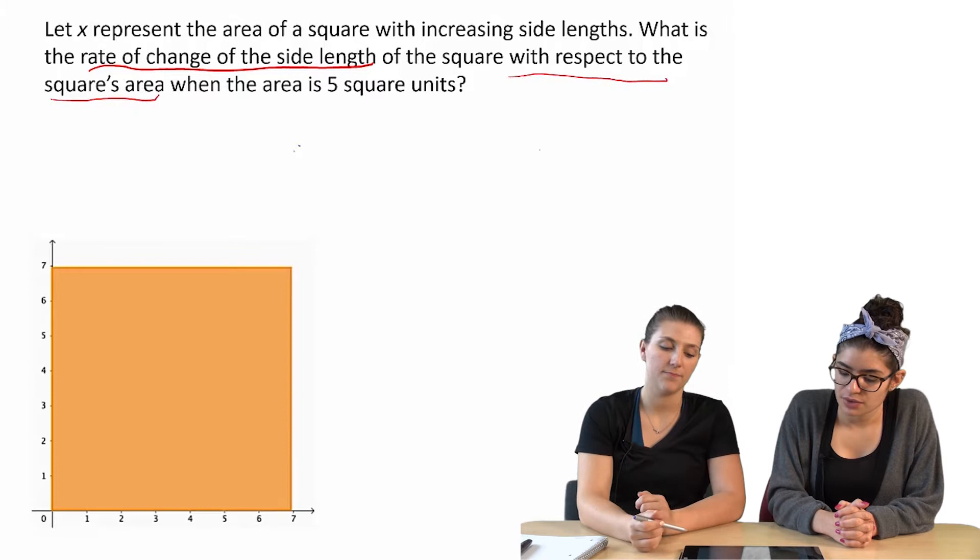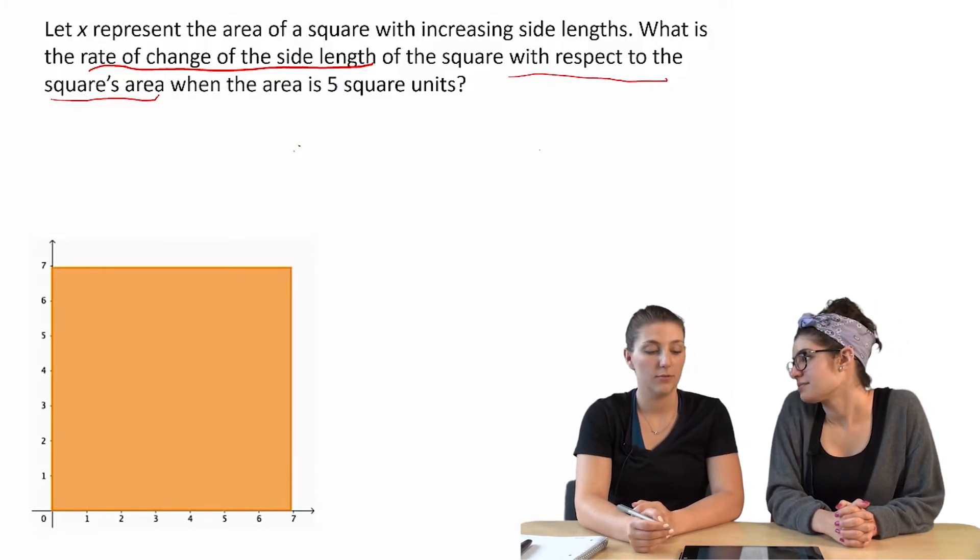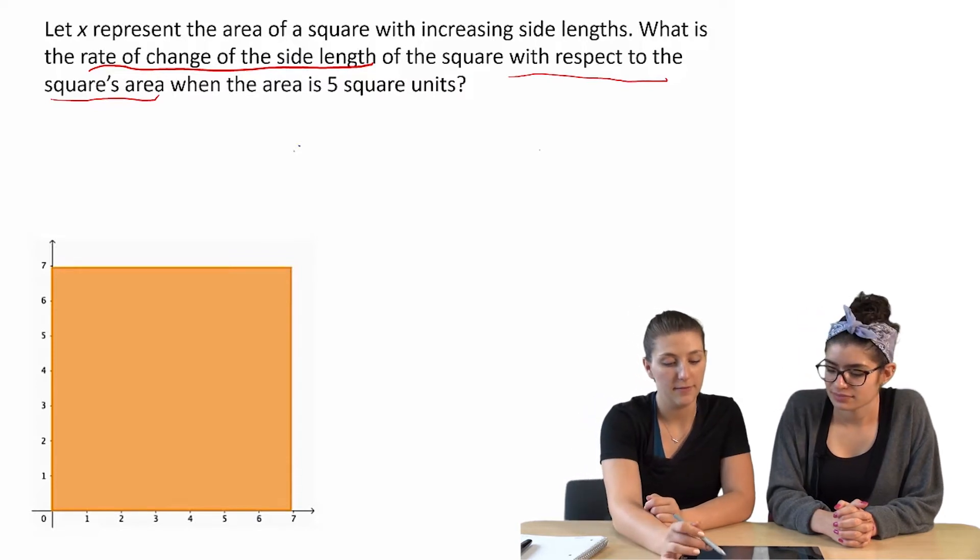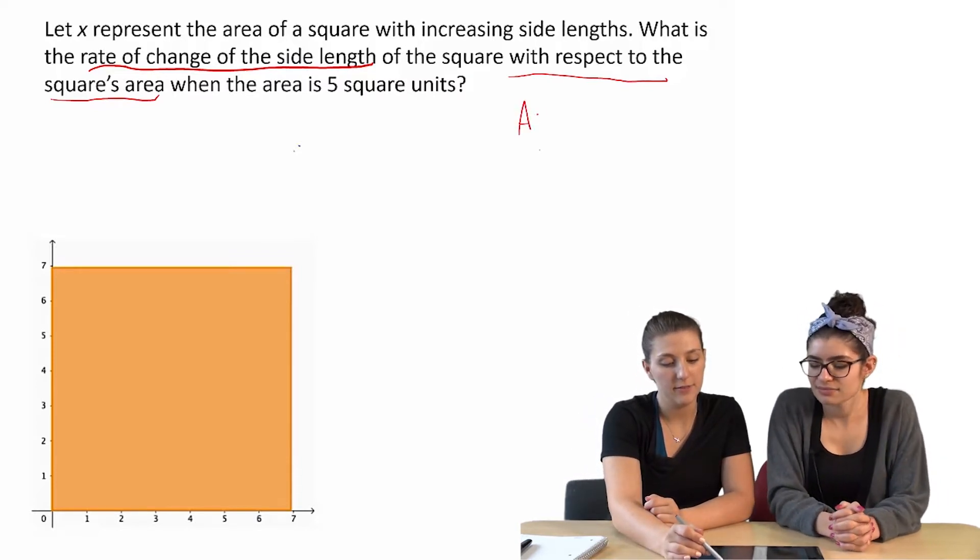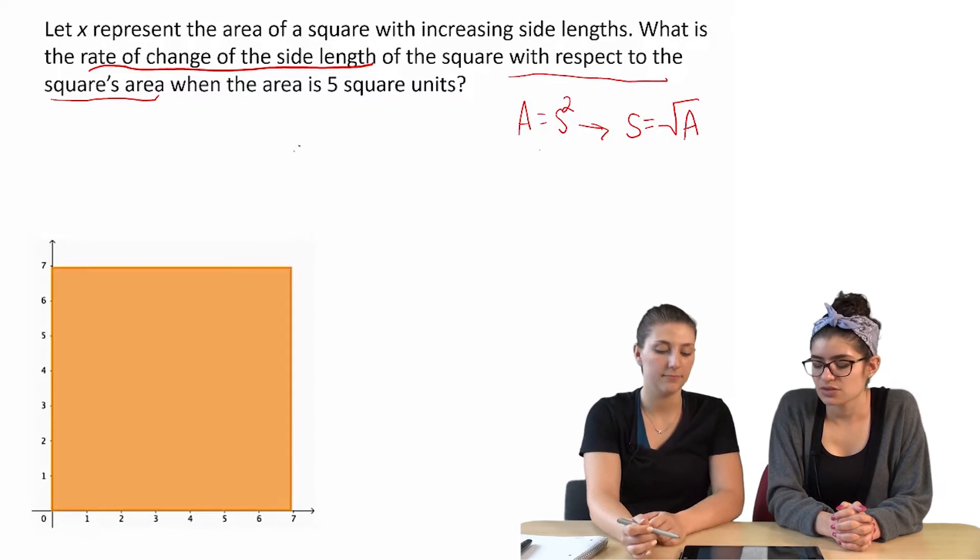And we know that we're looking at when the area is 5. And we know the area is just side squared. We know a lot of things. Area equals side squared. We know that the side is equal to root a. That's true.